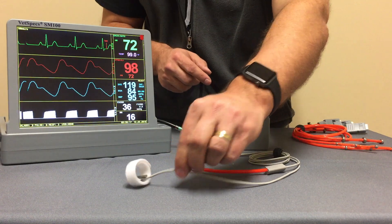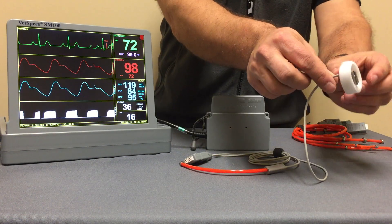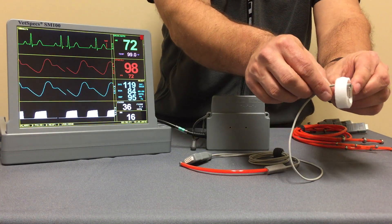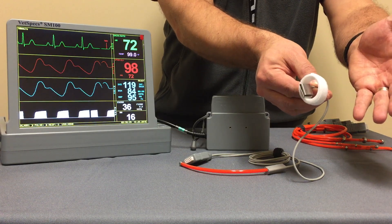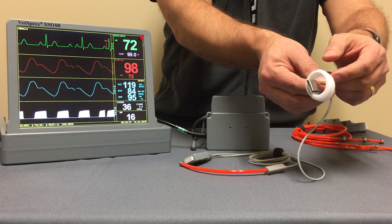You then attach the white ECG limb plate to the right front limb. There is a contact plate, your choice of conduction, whether it be alcohol, saline, or conduction gel.